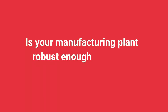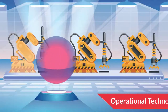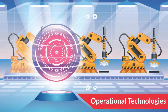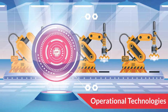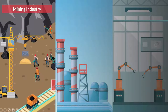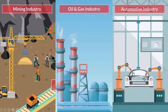Is your manufacturing plant robust enough to protect operational technologies OT? In this video, we will discuss why large manufacturing organizations should reinforce privileged access control in operational technologies environments. Operational technology OT is a computing system used to manage and control industrial operations such as mining operations, oil and gas production, and automobile production line management.